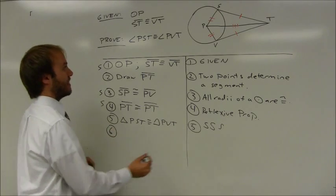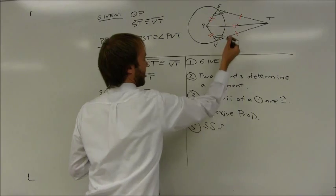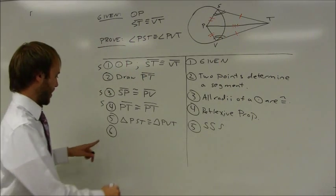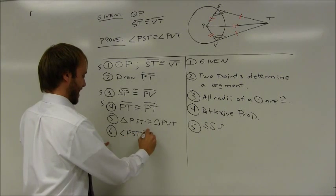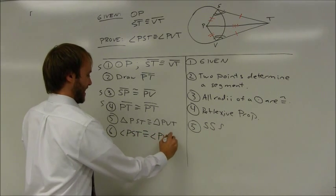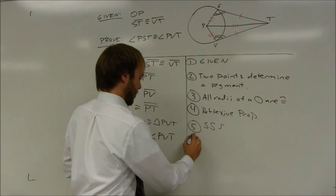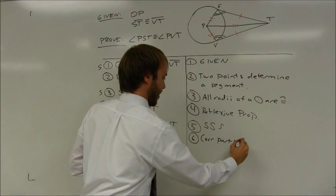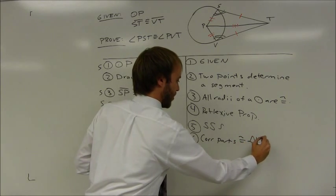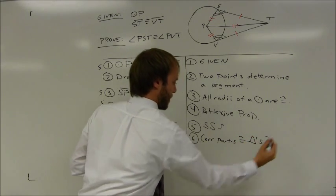And finally, this angle is congruent to this angle because they're corresponding parts of congruent triangles. So angle PST is congruent to angle PVT because corresponding parts of congruent triangles are congruent.